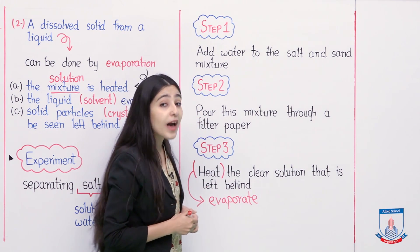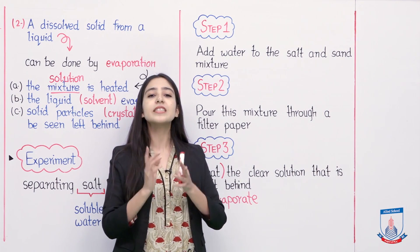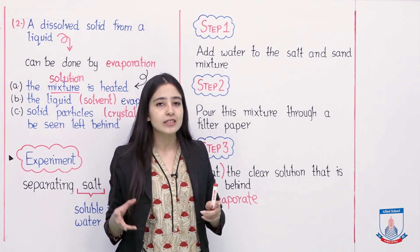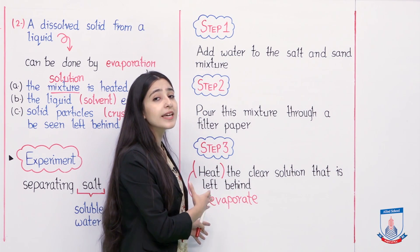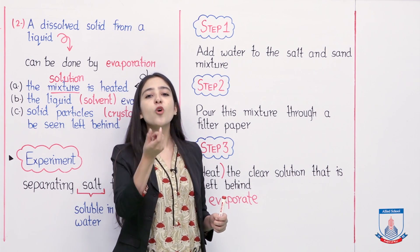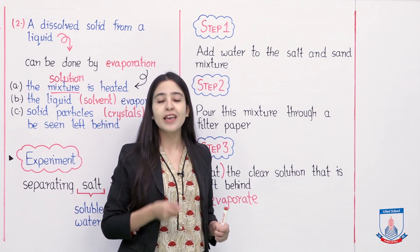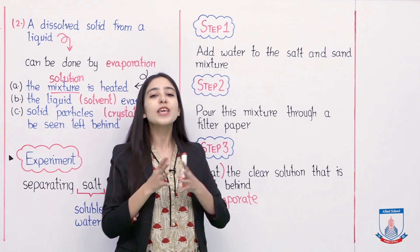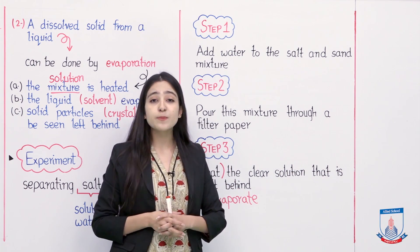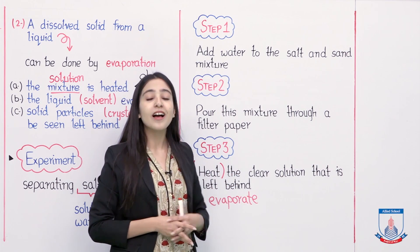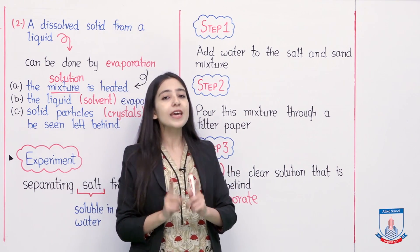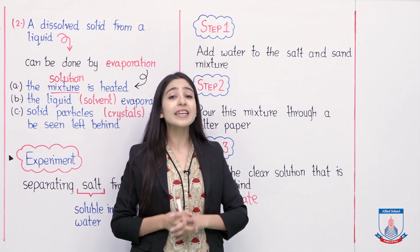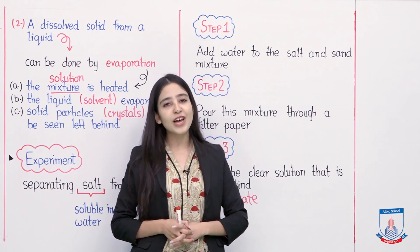Step 3: heat the clear solution that is left behind. We now have the solution — which we can call filtrate since it passed through the filter paper — containing water with dissolved salt. We heat this solution, and when the liquid evaporates, the evaporation process separates the dissolved solid particles from the liquid. When we evaporate the water, the salt crystals are left behind. So we have successfully separated the salt and sand from each other. This was a very interesting experiment. I hope the concept of separation will never be forgotten. That's all for today — take care, goodbye.